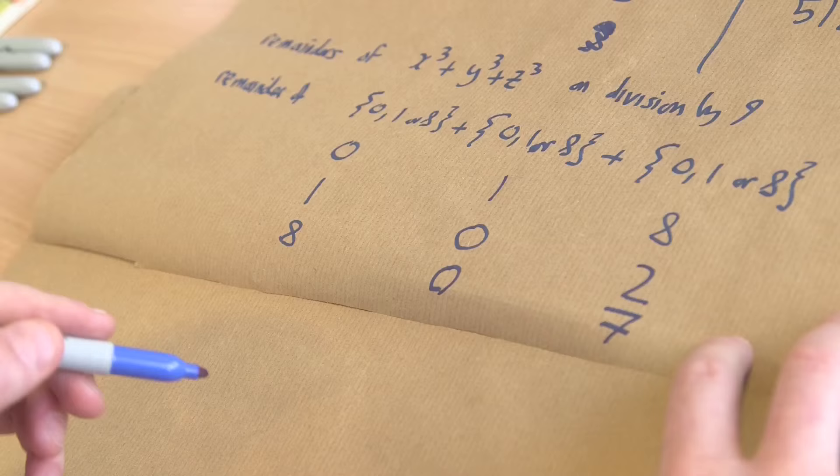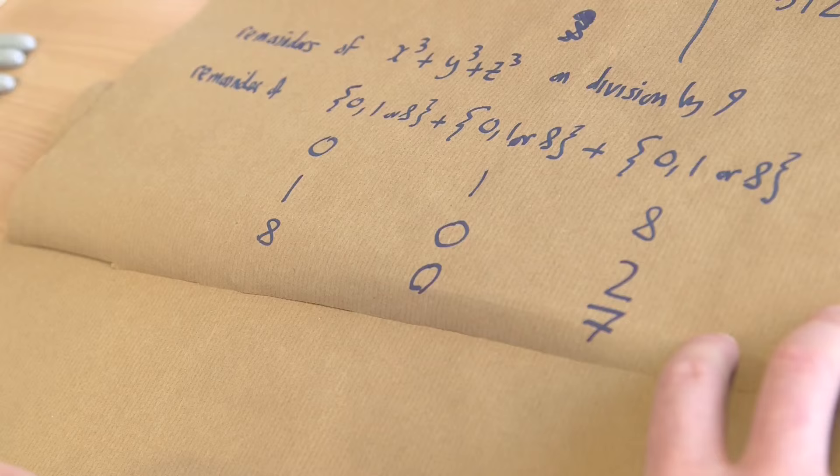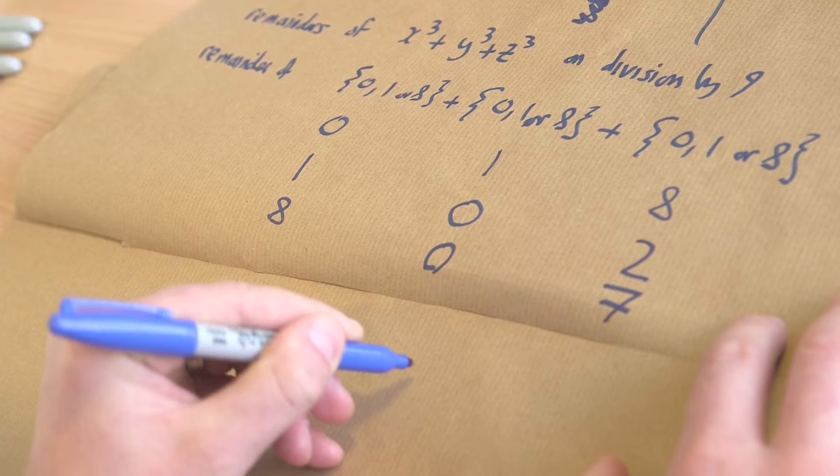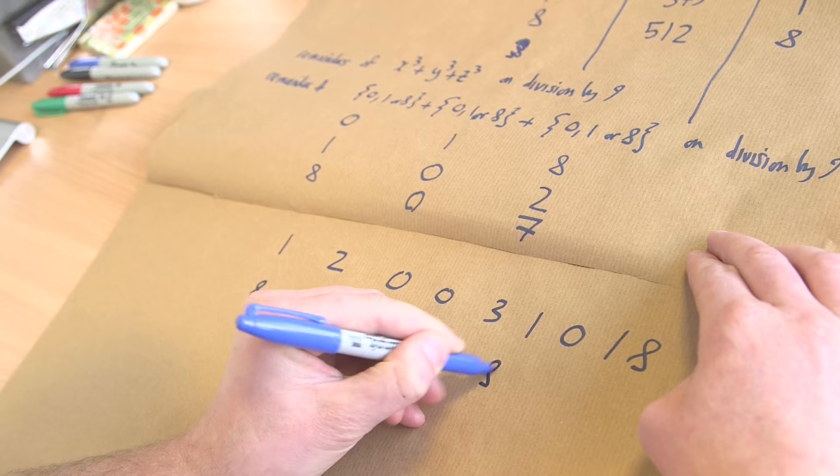We just continue in this way, thinking of all the possible ways of adding up these 3 numbers and then thinking about what the remainder is on division by 9. When you do this, the remaining answers you get are 1, 2, 0, 2, 3, 1, 0, 1, 8, 8, 0, 7, 0, 1, 8, 7, 8, 6.